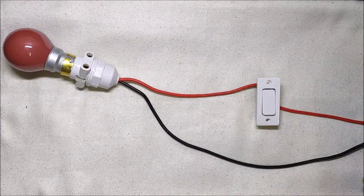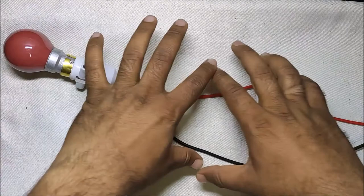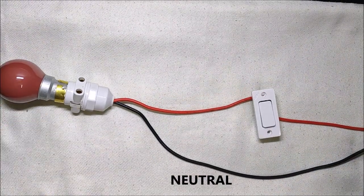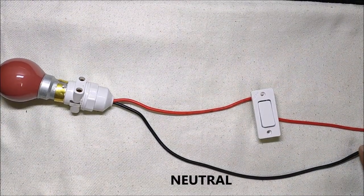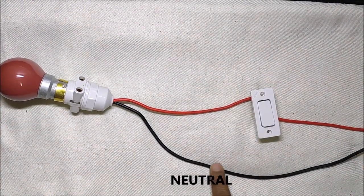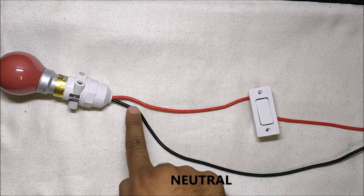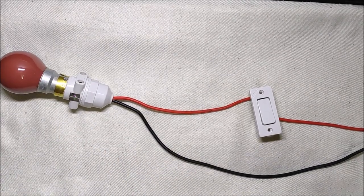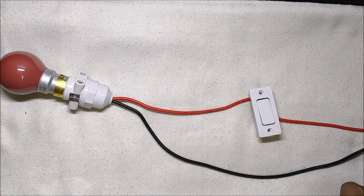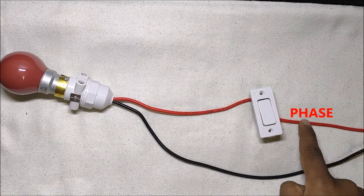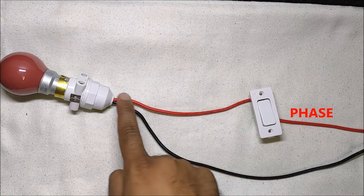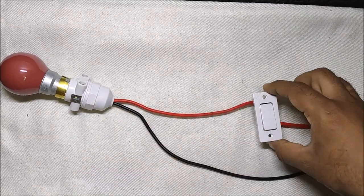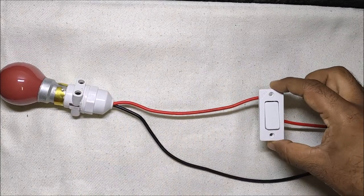Let's see the lighting circuit. Neutral from the DB is directly connected to the lamp, but phase from the DB is connected to the lamp through the switch.